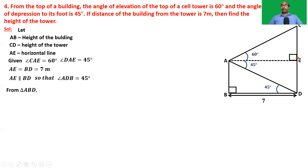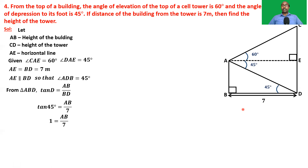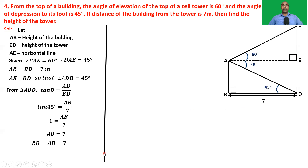From triangle ABD: tan D = AB/BD, so tan 45 = AB/7, giving 1 = AB/7, therefore AB = 7 meters. Since AB = 7 meters, ED is also equal to 7 meters.